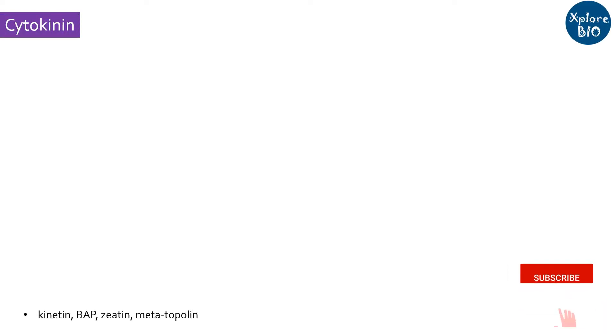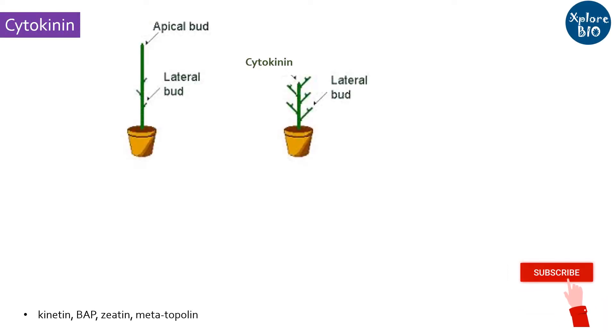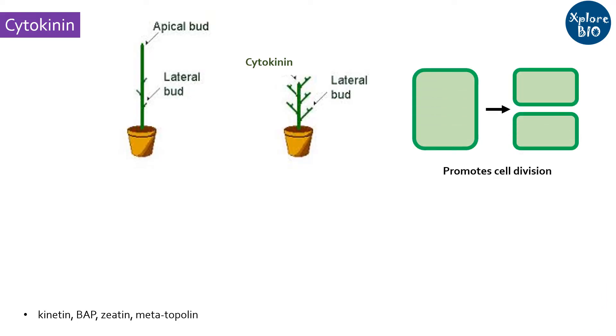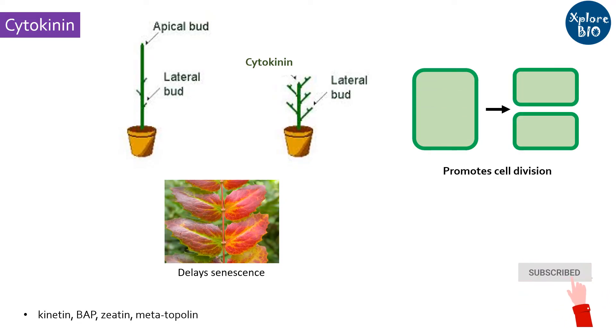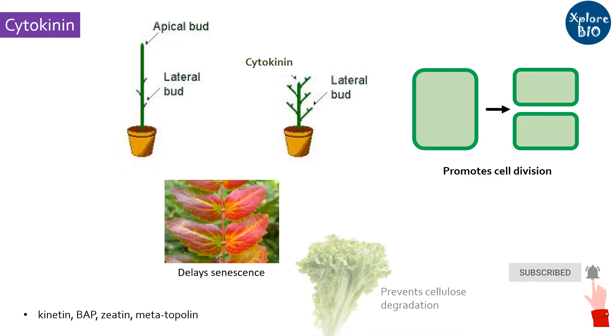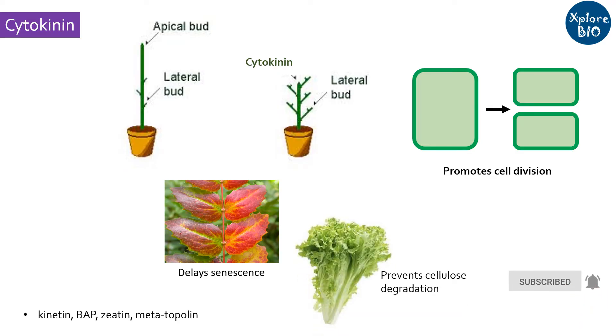The third growth promoting hormone or PGR is cytokinin. In contrast to auxin, it prevents apical dominance and promotes lateral shoot growth. It induces cell division and also delays senescence. It prevents cellulose degradation and thus prevents yellowing of lettuce leaves after cutting.